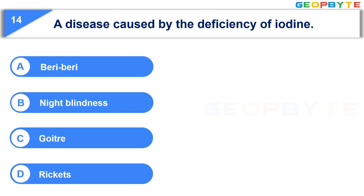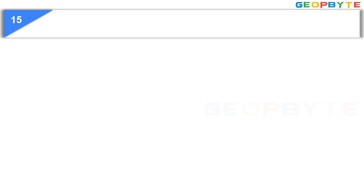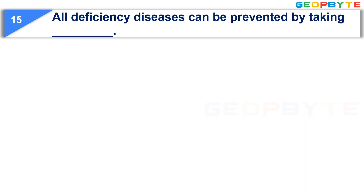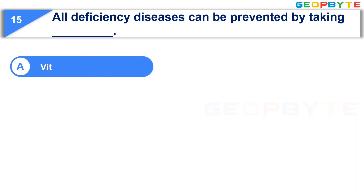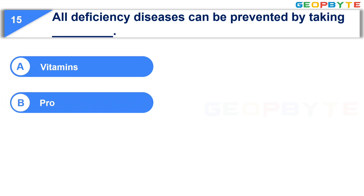Your time is up and the correct answer is Option C: goiter. The last question is: All deficiency diseases can be prevented by taking blank. Option A: Vitamins. Option B: Proteins.